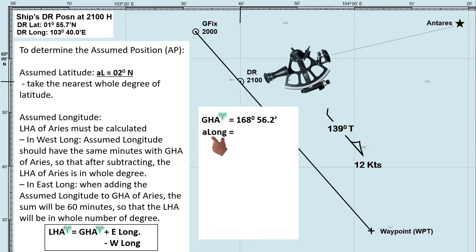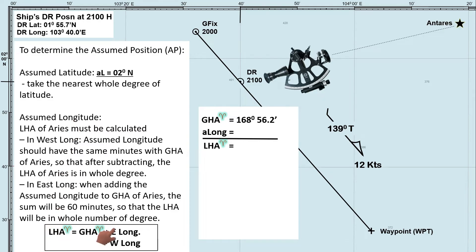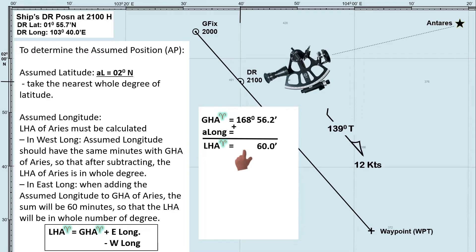Next, we will apply the assumed longitude to determine the LHA of Aries. Since our DR longitude is east, and to find LHA we add easterly longitude, the assumed longitude will be added. It is stated in the procedure that when adding the assumed longitude to the GHA of Aries, the sum should be in whole degrees — 60 minutes — so that the LHA is a whole number of degrees. To achieve this, the minutes of the assumed longitude will be 3.8 minutes.